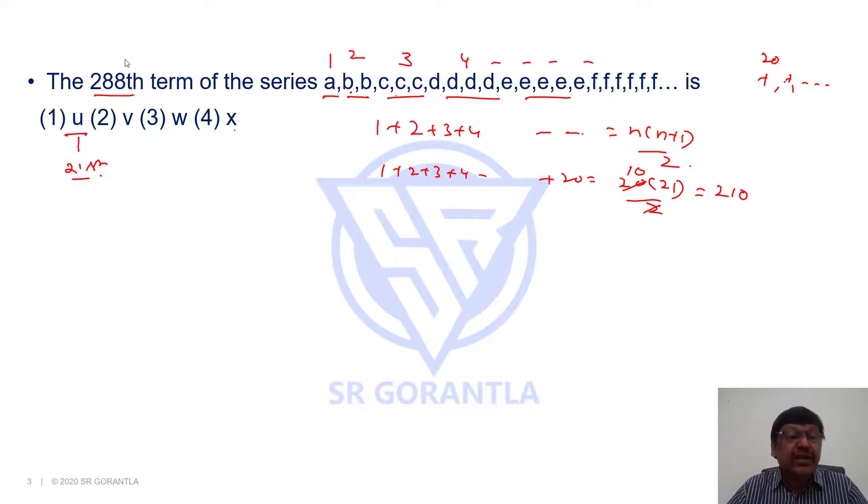But I want 288th term, so up to t is not sufficient. Then if I take u, u is the 21st term, so we will write it 21 times. Not enough. It is 231. But we need 288.